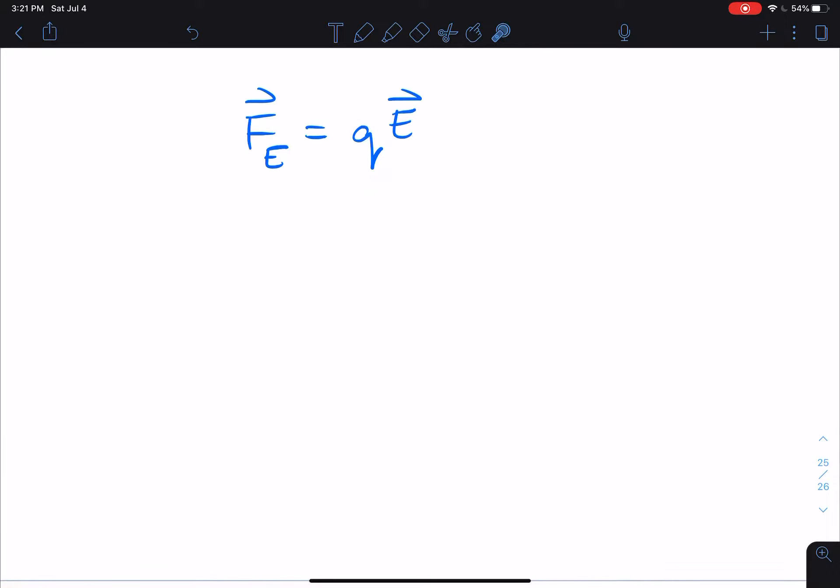That's crucial, because if q is positive, then that means the electrostatic force and the E field are parallel to each other. So if q is greater than zero, that means that the electrostatic force is parallel to the electric field.